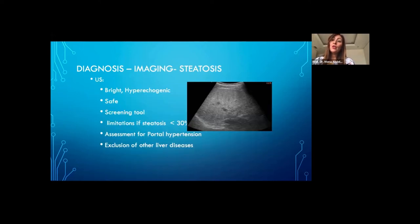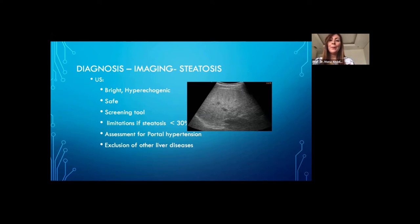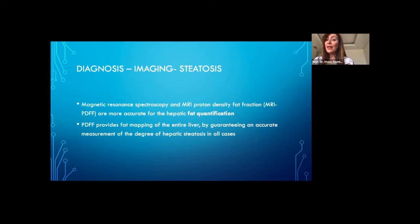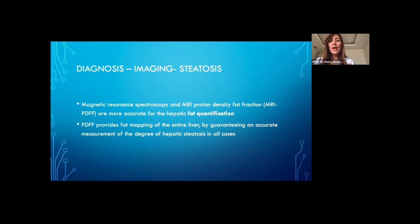For imaging to diagnose steatosis, ultrasound is easy, safe, and available. A hyperechoic bright liver compared to kidneys and spleen is indicative of NAFLD, but the limitation is that it is not very accurate if liver steatosis is less than 30%. It is useful to evaluate for portal hypertension and other liver diseases. MRI spectroscopy and MRI proton density fat fraction (MRI-PDFF) are accurate in hepatic fat quantification, provide mapping for the entire liver, and can grade the degree of hepatic steatosis.